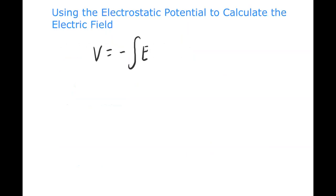We've been looking at the problem of calculating the electrostatic potential. Formally, you get it by taking a line integral of the electric field over some path. The electric field E and displacement vector are both vectors, so when you take their dot product you get a scalar. The electrostatic potential is an example of a scalar field.